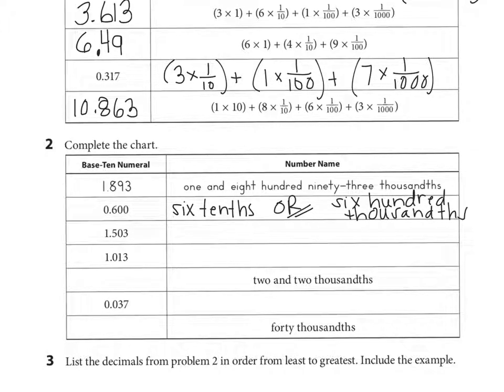Looking at the next one, we see 1 and 503 thousandths. So you're always going to list the place value the last digit is. So where's the place value this 3 is in? The thousandths place, that's right. So we're going to say 1 and 503 thousandths. So if you notice, the only time I write and is when there's a decimal point.